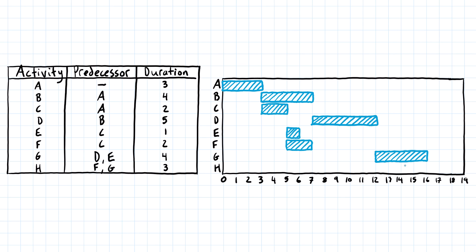Activity H can't start until both F and G are finished. F finishes at the end of the seventh day, and G finishes at the end of the sixteenth day. We can't start H until both are done, so we start after the sixteenth day. Activity H is three days long: one, two, three — taking us until the end of the nineteenth day.